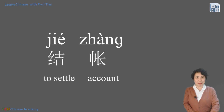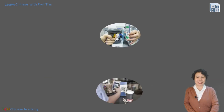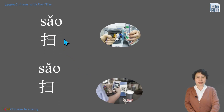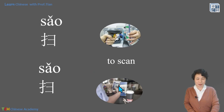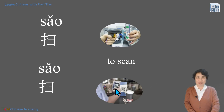So let's see — how do we 买单 or 结账 in China? This action means 扫, to scan. Both in this picture and this picture, the actions are both 扫. 扫 means to scan the QR code. In China nowadays, mobile payment is very popular. Everywhere you just scan the code and get paid. So 扫 is very important.